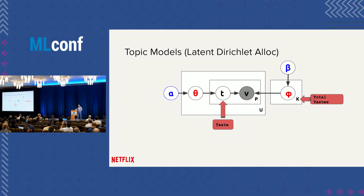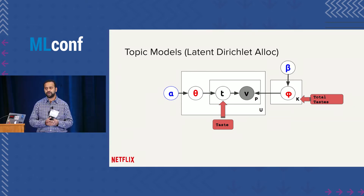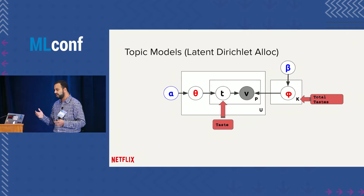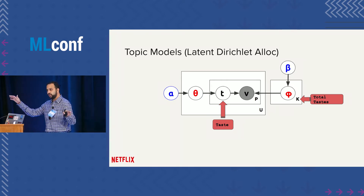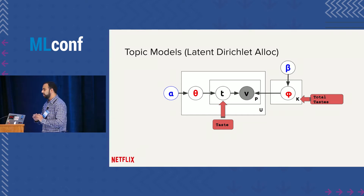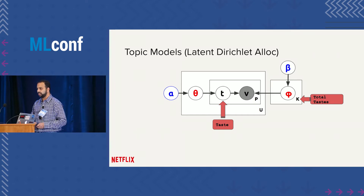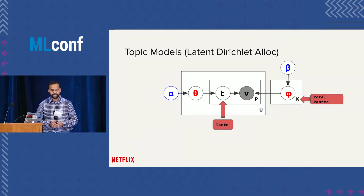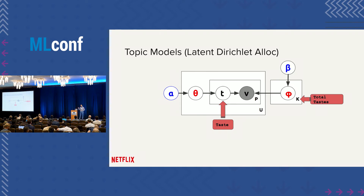Let's say a user is in the mood of watching something and has a couple of tastes — for example, comedy or horror. He has a distribution over tastes, with perhaps more bias towards comedy and less towards horror. Conditioned on that, the user selects a taste; conditioned on the taste, the user selects a movie; and then the user watches the movie.